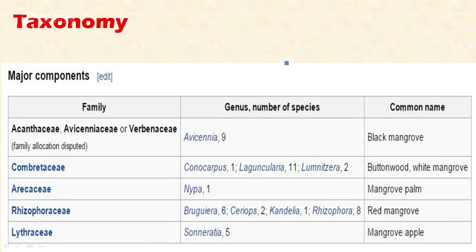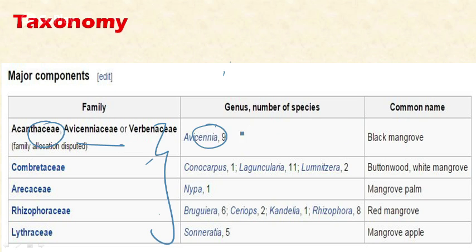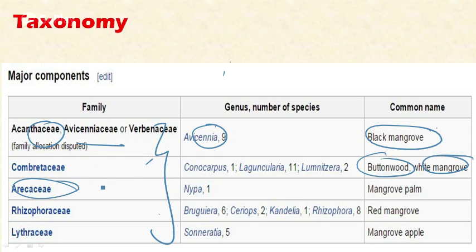Taxonomically, mangroves are broadly classified into five important families. First is Acanthaceae or Avicenniaceae — under this, Avicennia is the important genus, and these mangroves are called black mangroves. The second family is Combretaceae, whose mangroves are called white mangroves or buttonwood mangroves. The third family is Arecaceae — this family also includes areca nut — and mangroves belonging to Arecaceae are called mangrove palm. The fourth is Rhizophoraceae, called red mangroves, and the fifth is Lythraceae, known as mangrove apple.